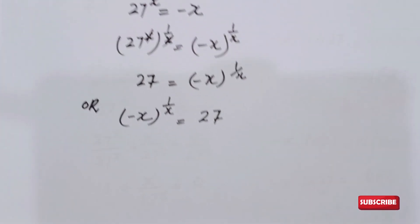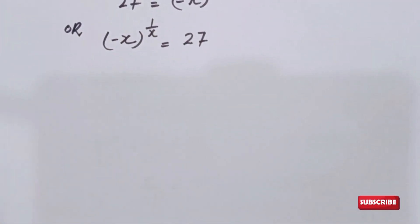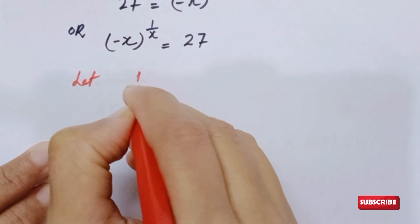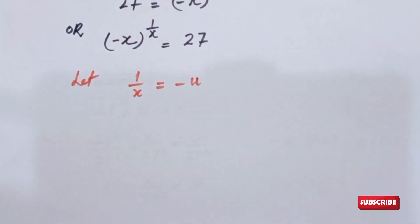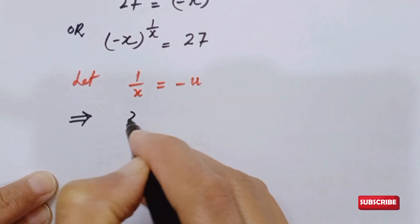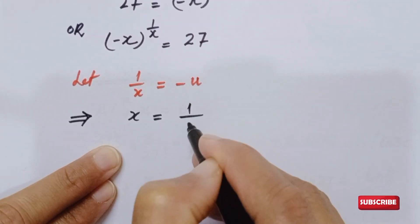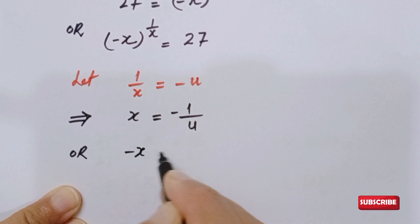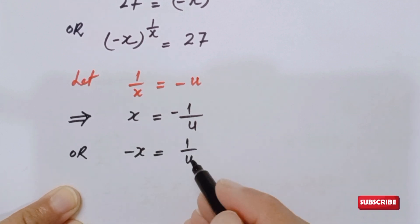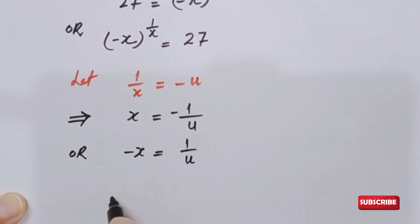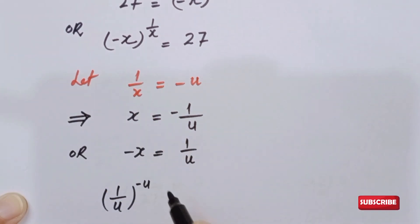In the next step we make a substitution. Let 1 over x equal minus u, which implies x equals minus 1 over u, or equivalently minus x equals 1 over u. We plug in the values of minus x and 1 over x into our expression: minus x becomes 1 over u, and 1 over x becomes minus u, so we get (1 over u) to the power (minus u) equals 27.